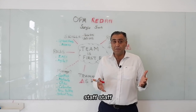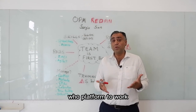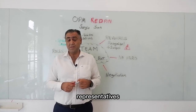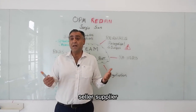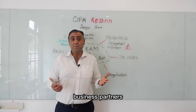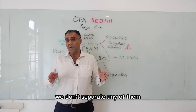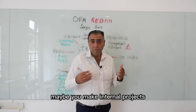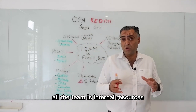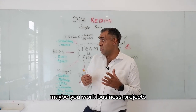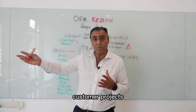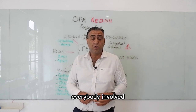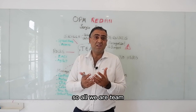The project team includes project management staff, staff who perform the work, third-party experts, users or customers, representatives, sellers, suppliers, and business partners. We don't separate any of them — we are all together the project team. Maybe you make internal projects where all the team is internal resources, or maybe you work on business or customer projects where suppliers, customers, and your company are all involved. So all of us are the team.